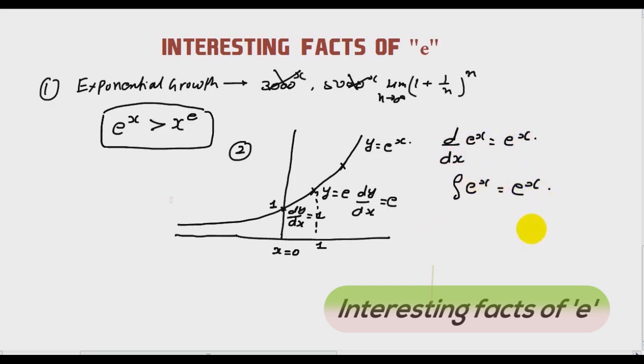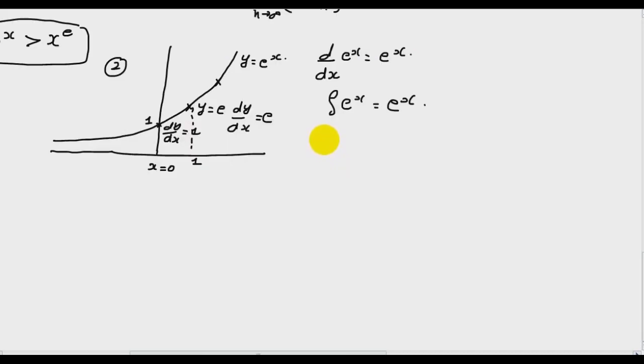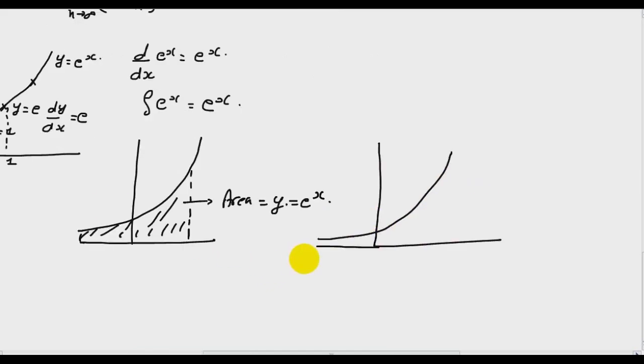What does it mean? If you see, the area under the curve is always equal to y, which is e to the power x. So what is the area from minus infinity to 0? So integration 0 to minus infinity e to the power x is 1. Similarly at x equal to 1, the total area will be equal to e.